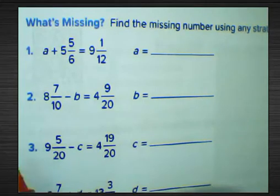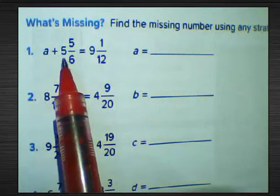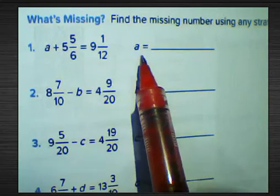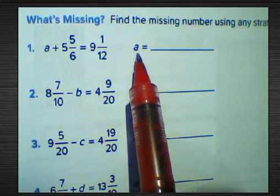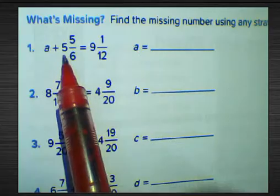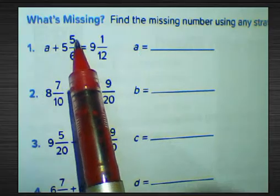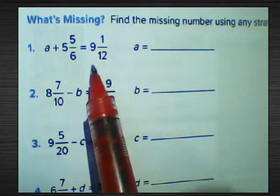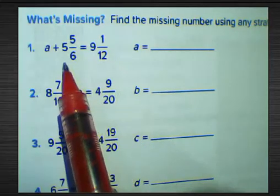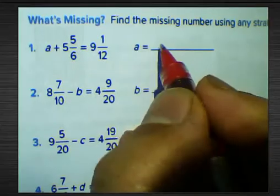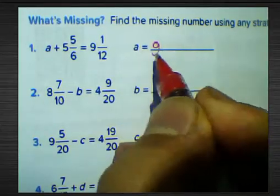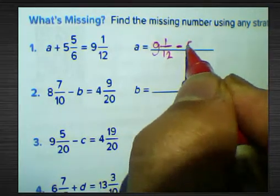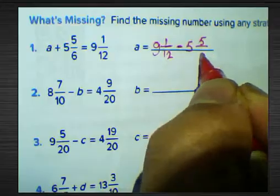Question number one: e plus 5 and 5 over 6 equals 9 and 1 over 12. We want to find the unknown number e. To find e, we must find the difference between the result and 5 and 5 over 6: that is 9 and 1 over 12 subtract by 5 and 5 over 6.